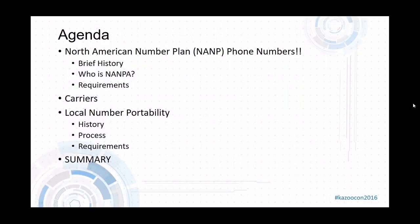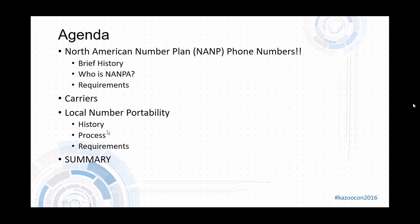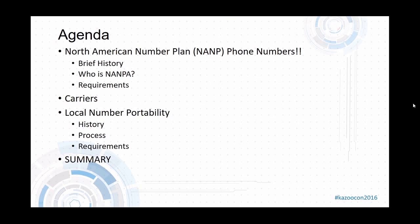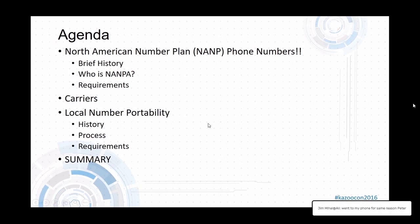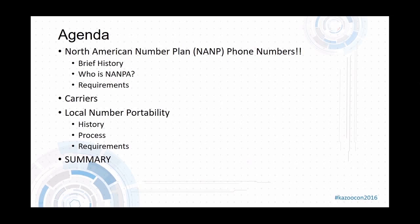We're going to be talking about the North American Numbering Plan, or phone numbers. We're going to go into a brief history, talk about who is the North American Numbering Plan administrator, and some of the requirements that carriers need in order to be ordering phone numbers. We're also going to be talking about local number portability, a little bit of history and the process and the requirements, and at the end we'll give a brief summary.